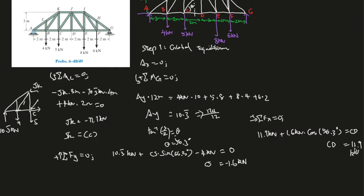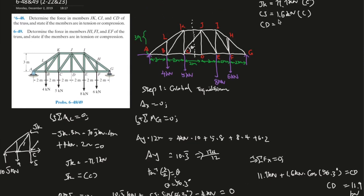Because pushing on the joint is a reaction force because in reality it's being compressed. So it's a C. And CD, the last one, and now we can use sum of the forces in the X direction. We go to zero. So JK is 11.1 kilonewtons plus 1.6 kilonewtons times the cosine of the distance. This whole thing should give you CD.